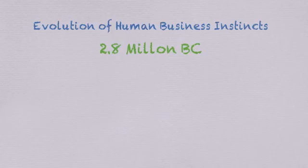It was between the period of 2.8 million BC and 60,000 BC that our modern-day human business instincts were shaped by evolutionary forces.